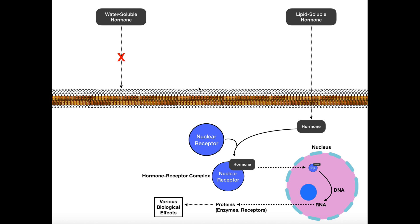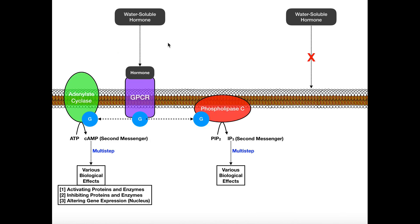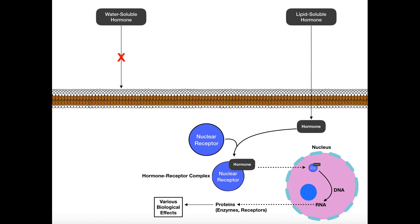So lipid-soluble hormones cross the membrane directly, whereas water-soluble hormones must bind to a plasma membrane receptor, transduce the signal through the membrane via that receptor, and then lead to the production of a second messenger inside the cell — all because the water-soluble hormone can't cross the membrane. In the next video, we're going to look at the interplay between two very important structures in the endocrine system: the hypothalamus and the pituitary gland. Join us then.